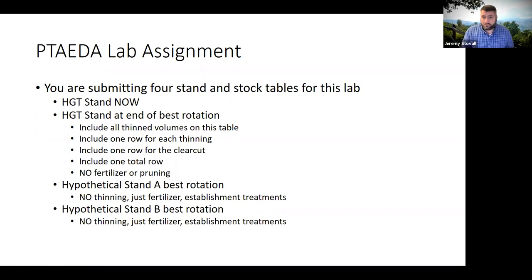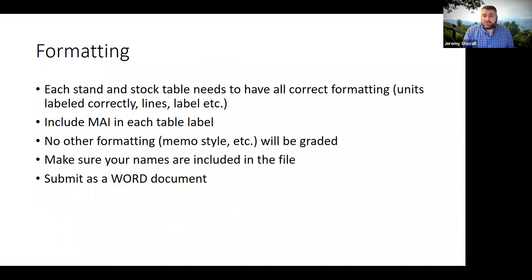For all four of these scenarios, I want to see you include the mean annual increment with correct units in the table caption. You have to correctly format each table — the right number of lines, with the right caption in the right place. Make sure you include mean annual increment in each table caption. Make sure your name and your partner's name is on the Word document, email it to me, and as long as it has the four tables in there you're good.